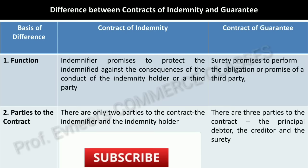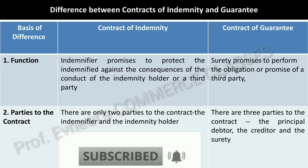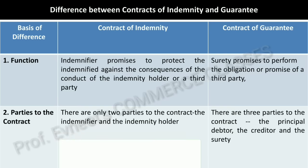Now let's cover the difference between Contract of Guarantee and Contract of Indemnity. This question appears in exams, sometimes as a long question — always write it in columns and rows format rather than paragraphs, as that scores better. The first basis of difference is function. Indemnity means covering someone's loss and restoring them to the position they were in before the loss occurred — like an insurance contract, which is a contract of indemnity.